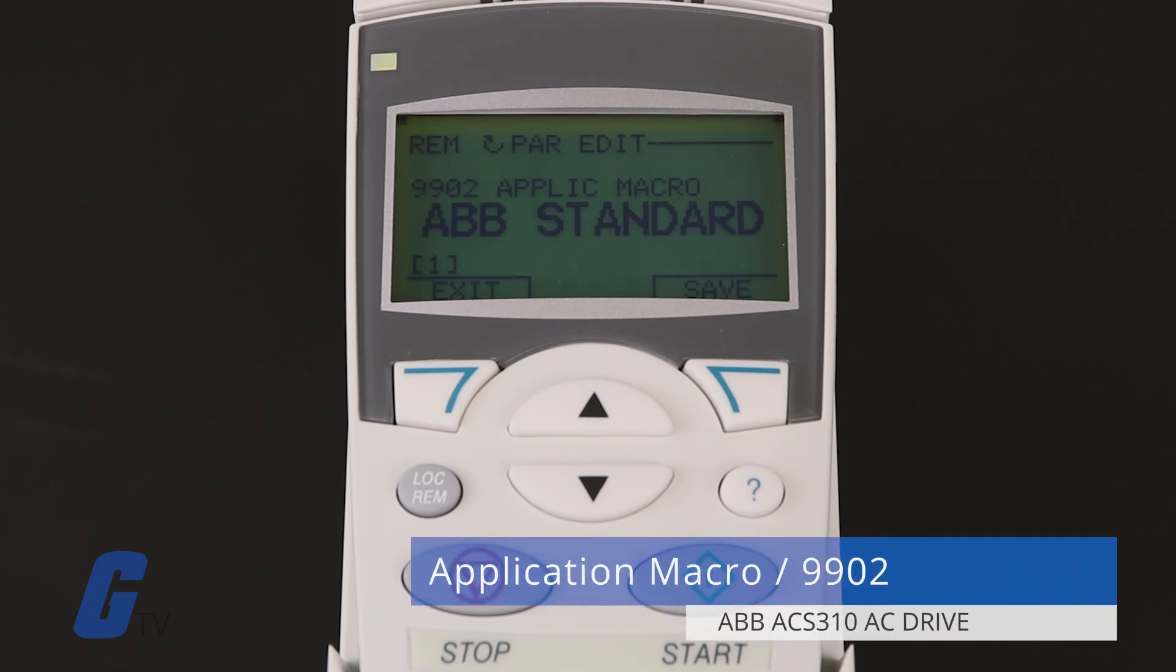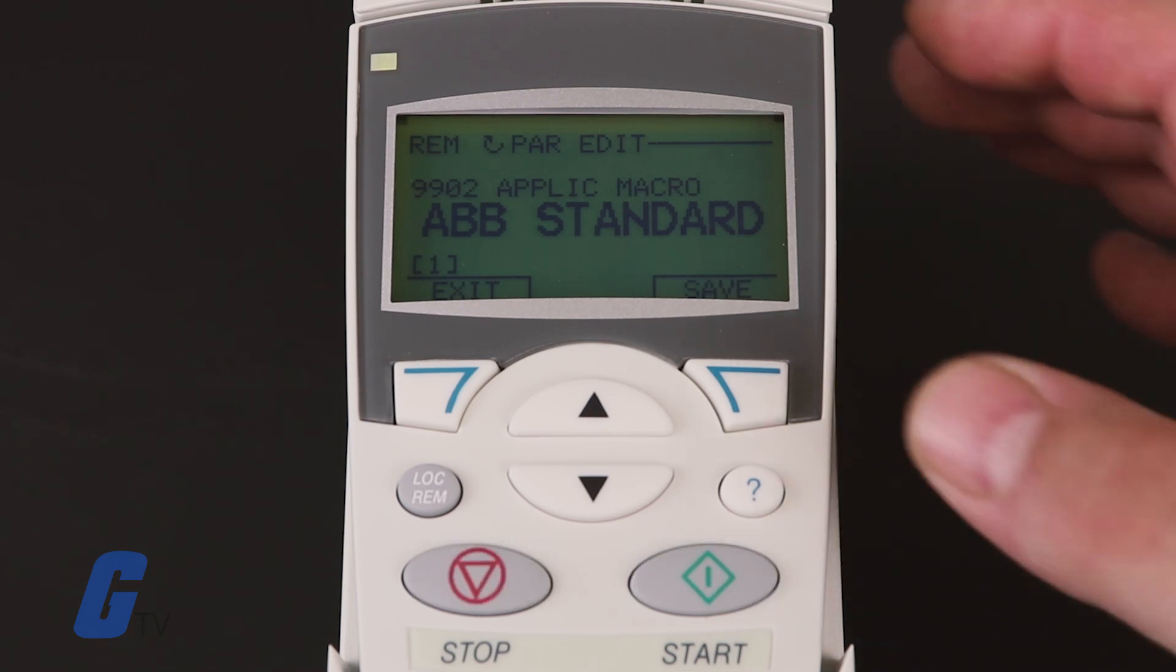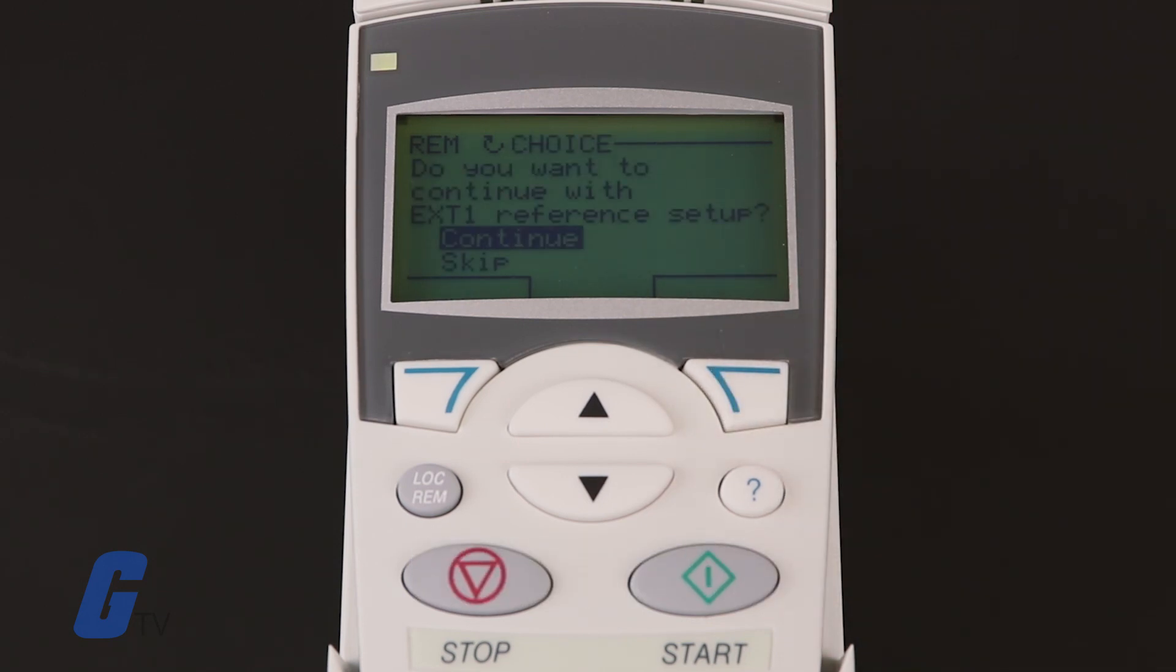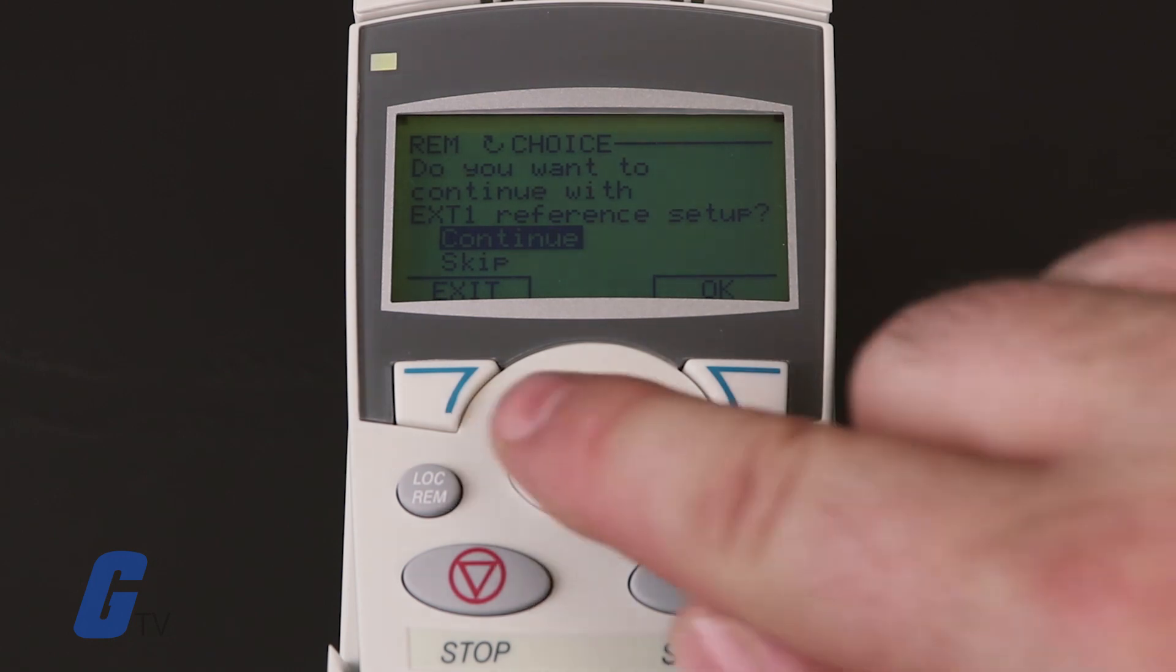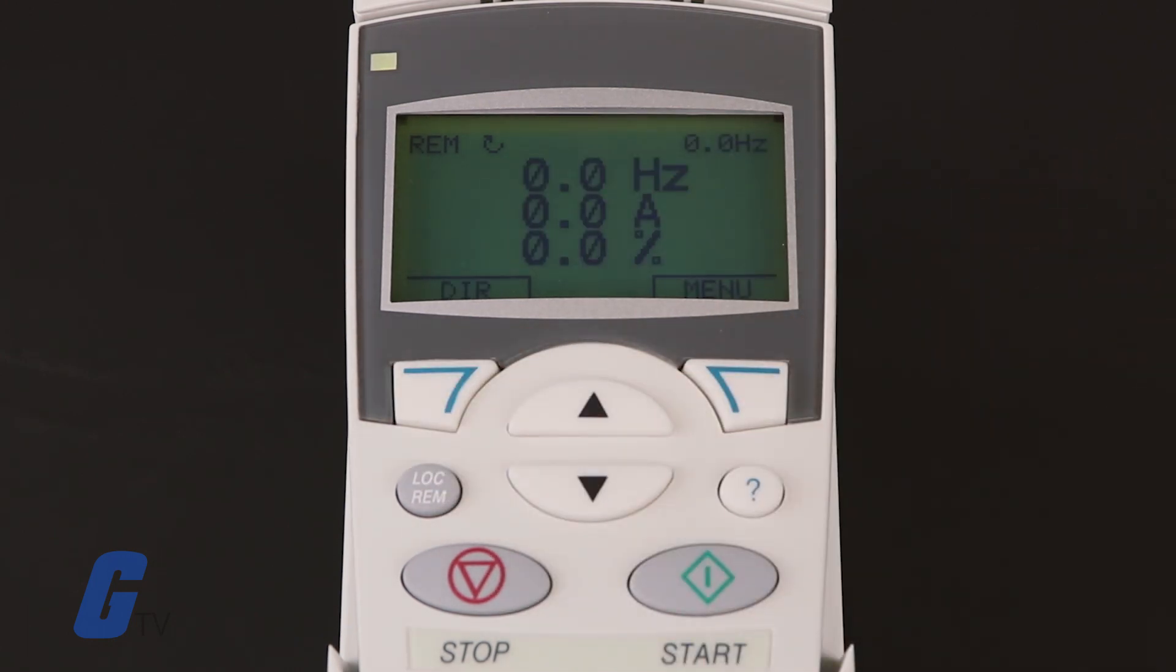Here you will select the application macro according to which control cables are connected. The assistant may ask you to configure additional options depending on your setup. Once you have finished the application setup, the assistant will suggest the next setup to run. You can continue or skip as necessary or press the exit key to stop at any time.